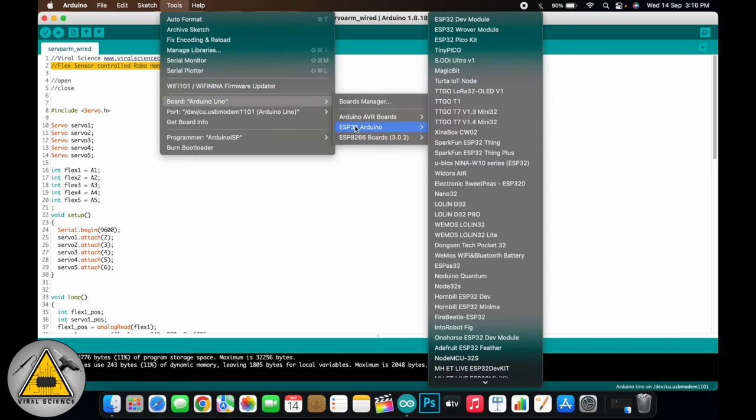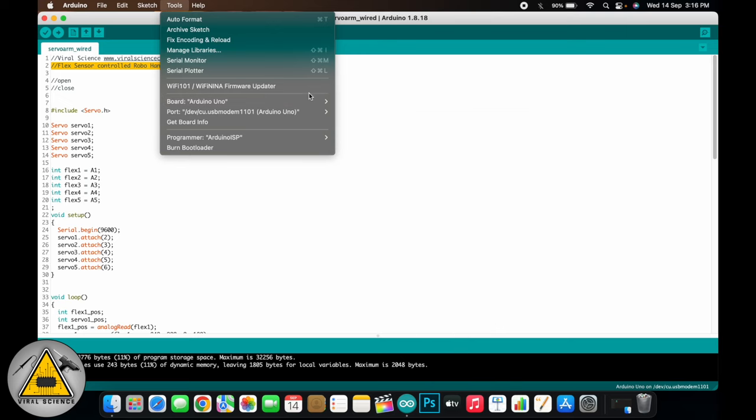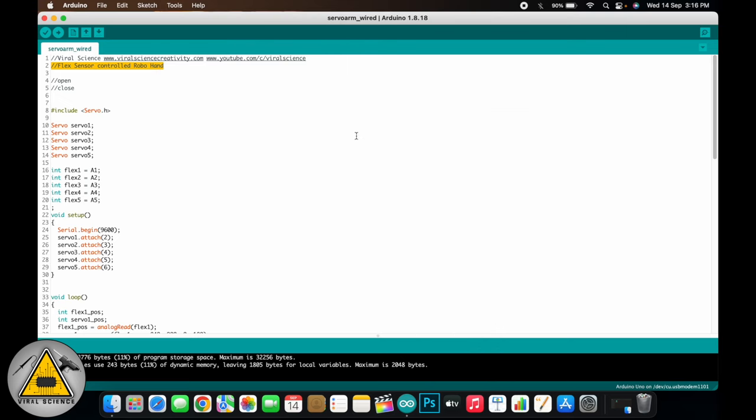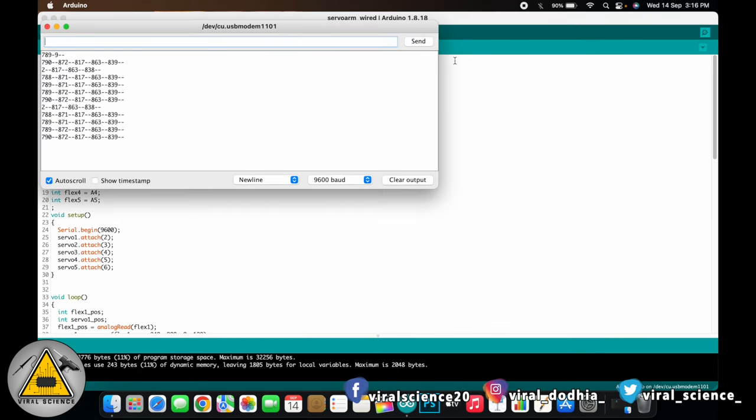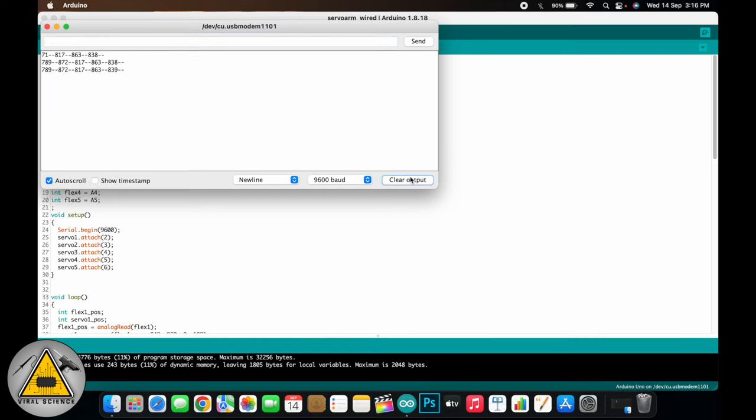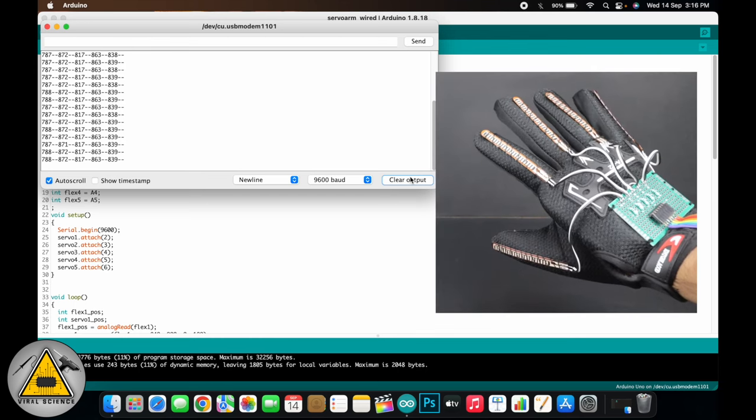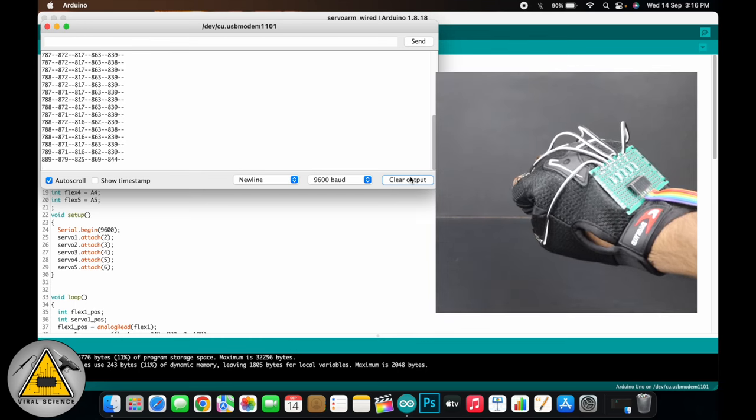After uploading the code, open the serial monitor. And here select the baud rate as 9600 and you'll find the sensor readings of the flex sensors. Note down the readings of the sensor when the hand is open and when the hand is closed.